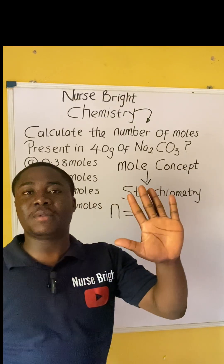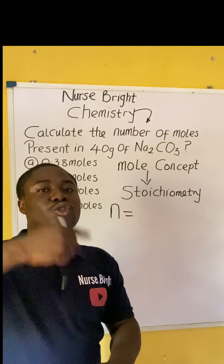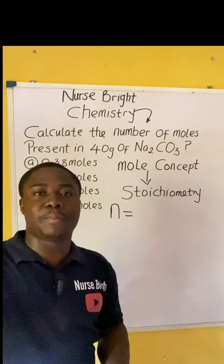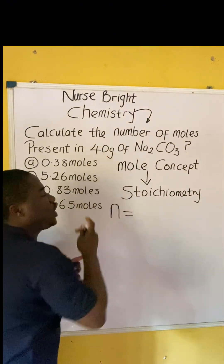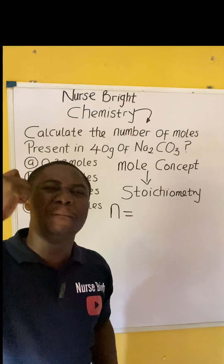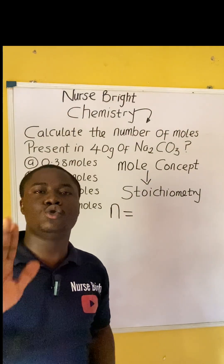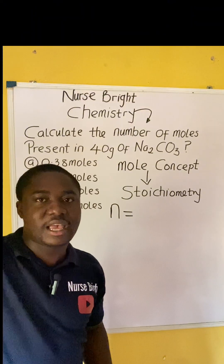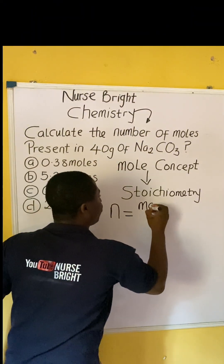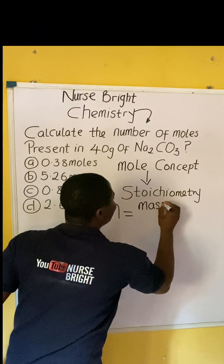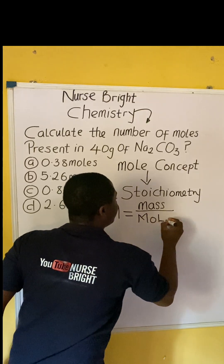We have five formulas to note for number of moles, and the formula to use is based on the parameter given to you. In this question, I saw G, which is grams, and grams means mass. When I see that, I already know the formula to use, which is: number of moles equals mass divided by molar mass.